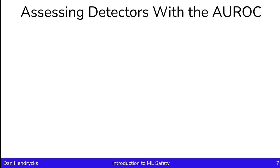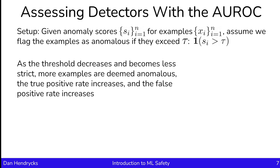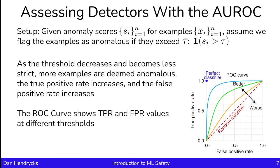Now that we have the concepts of true positive rate and false positive rate, we can work up to our first anomaly detection metric, the AROC. Let's assume we're given anomaly scores for each example, and we flag examples as anomalous if their score exceeds a threshold tau. As the threshold decreases and becomes less strict, more examples are deemed anomalous. But at the same time, more usual examples are also deemed anomalous, so while the true positive rate increases, so does the false positive rate. There's a tradeoff between the true positive rate and the false positive rate as we change that threshold.